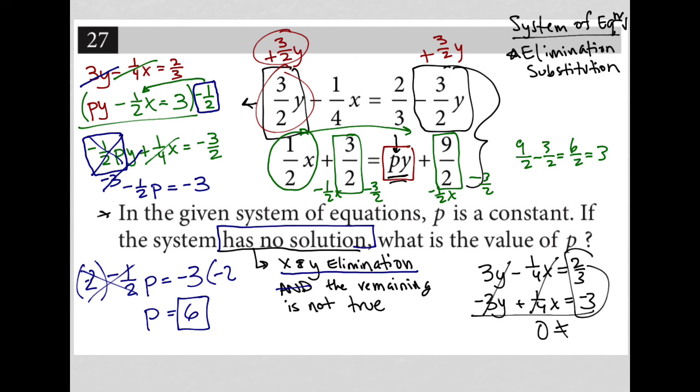Whatever that is, is not right. It's not equal to zero. So that's the part that's the remaining is not true. If this said zero equals zero, we'd have a problem. That would be a system that has infinitely many solutions. But in this case, we have zero does not equal whatever two thirds minus three is. So that's why the correct answer is six here.